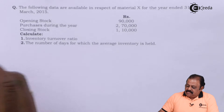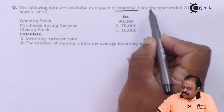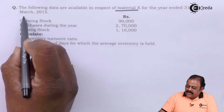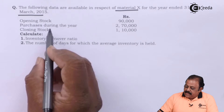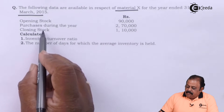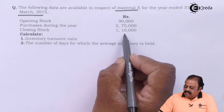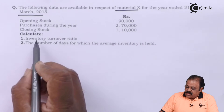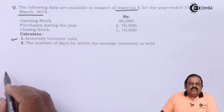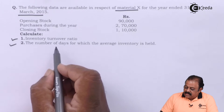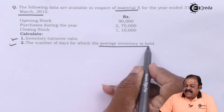Let us see the question. The following data are available in respect of Material X for the year ended 31st March 2015: Opening stock 90,000; Purchases during the year 2,70,000; Closing stock 1,10,000. We are required to calculate the Inventory Turnover Ratio and the number of days for which average inventory is held.